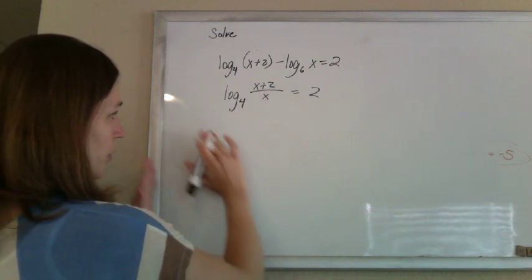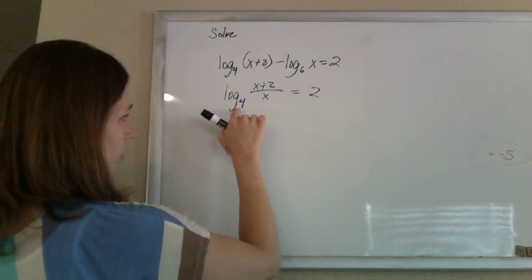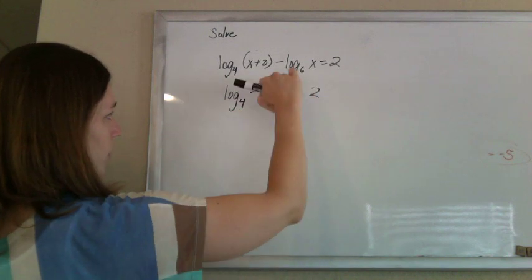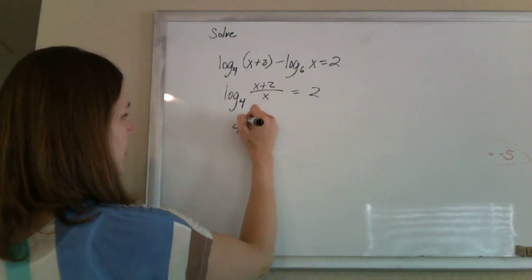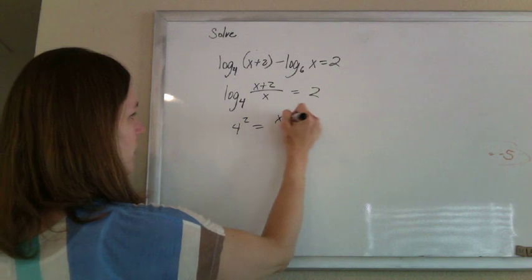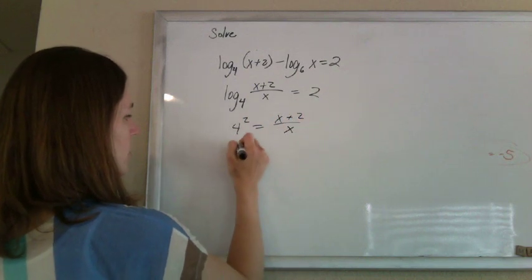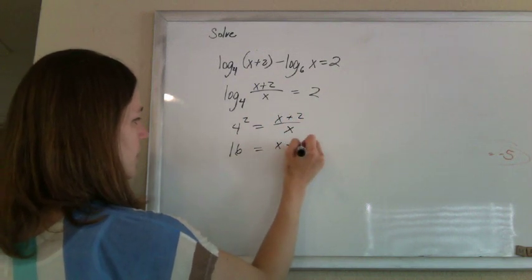Now undo the log by rewriting it as an exponential. So 4 to the second power will equal x plus 2 over x. So 4 squared equals x plus 2 over x. So 16 will equal x plus 2 over x.